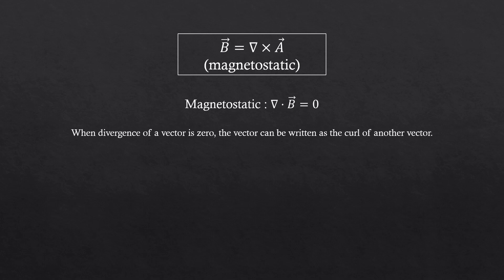In magnetostatic, divergence of B was zero. When divergence of a vector is zero, that vector can be written as a curl of another vector. So that's how we introduced a potential that has a direction, and the curl of that vector potential was said to be the magnetic field.